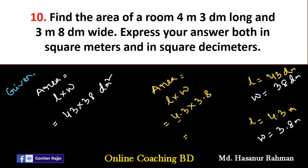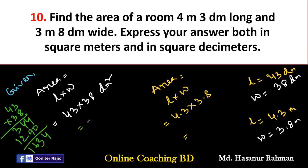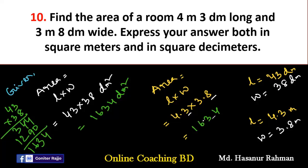After multiplying, we get 1634. At the multiplication of decimals, we count the digits after the decimal point — each number has one digit after the point, so the total is two digits. Therefore, we place the decimal point to get 16.34 meter square as the final answer.